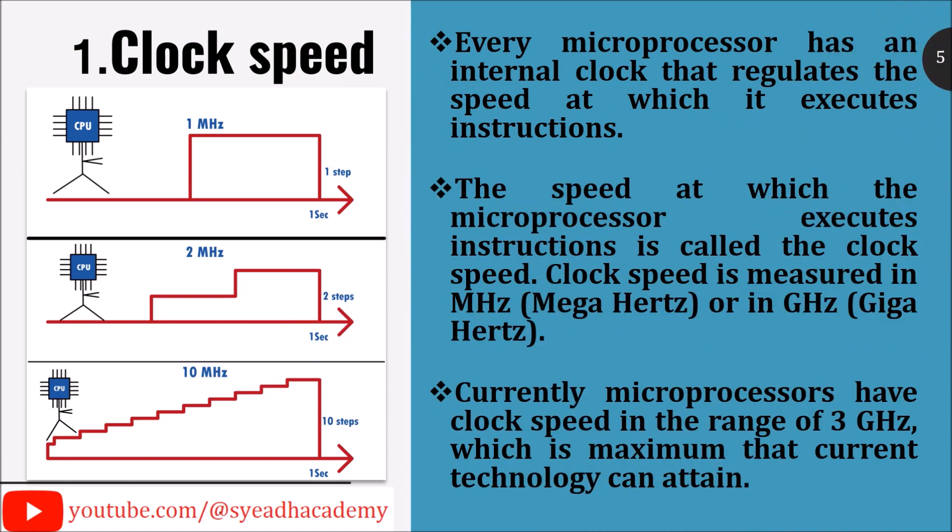Clock speed. Every microprocessor has an internal clock that regulates the speed at which it executes instructions. The speed at which the microprocessor executes instructions is called the clock speed, and it is measured in megahertz or gigahertz. Currently, microprocessors have clock speeds in the range of 3 gigahertz, which is the maximum that current technology can attain.